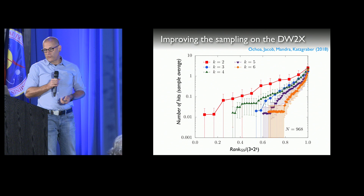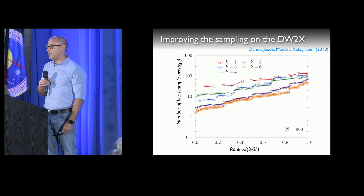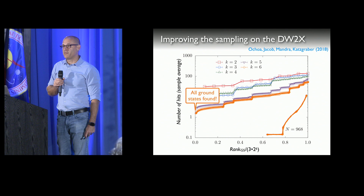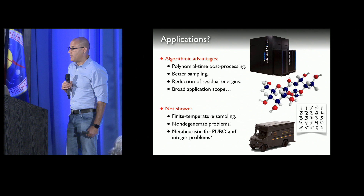How does this work on the data produced on the D-Wave? We apply this post-processing to the original data set. First, yes, there is still some bias left — it is a bit smaller. But most importantly, if I overlay the previous data for the largest k value, we now find all states — something we were not able to find before. I would say this is a huge improvement.